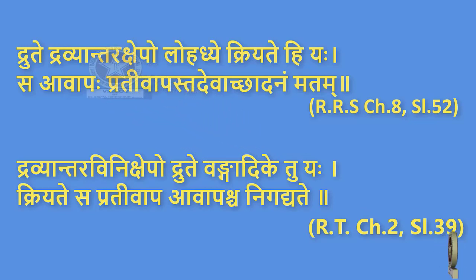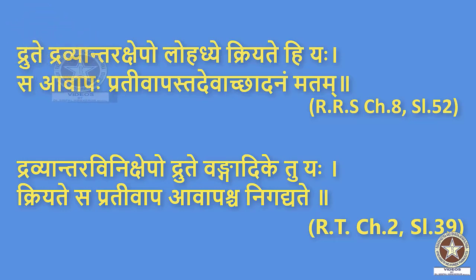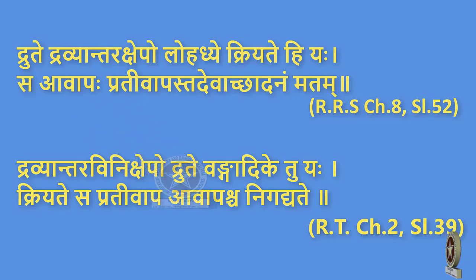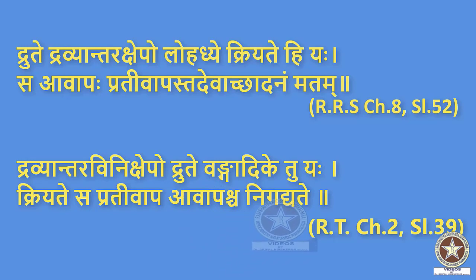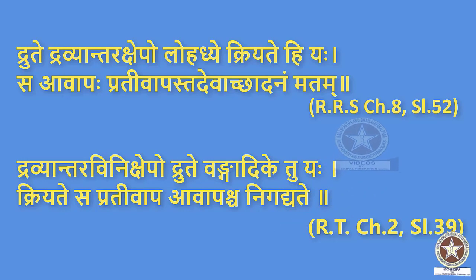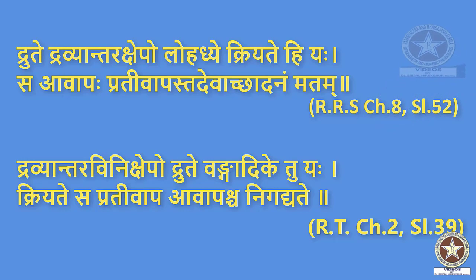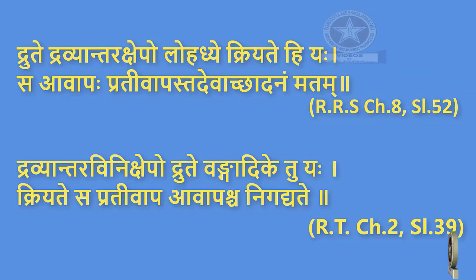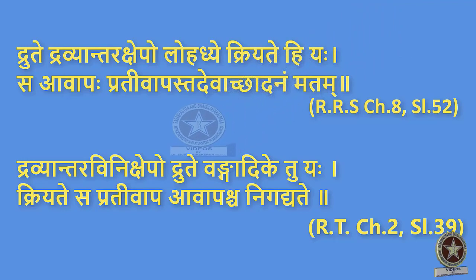Second reference: Rasa Tarangini, Chapter 2, Shloka 39 — 'Dravyantaraakshepo Dhrute Vangaadike Tu Yaha Kriyate Sa Prativapa Avapascha Nigadhyate.' Here, metals like Vanga or tin are heated till they turn to druta or molten state. Dravyantaraakshepo means addition of any other dravya to it. This procedure is called Prativapa or Avapa.